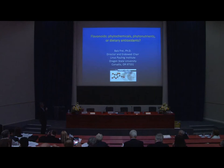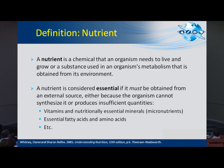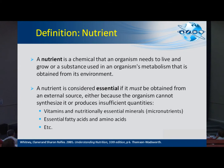My title is 'Flavonoids: Phytochemicals, Phytonutrients, or Dietary Antioxidants?' I mention phytonutrients because a lot of people say that flavonoids are phytonutrients. I want to start with a very simple definition of a nutrient: a chemical that an organism needs to live and grow, or a substance used in an organism's metabolism that is obtained from its environment. From this, you can already tell that flavonoids are not nutrients.